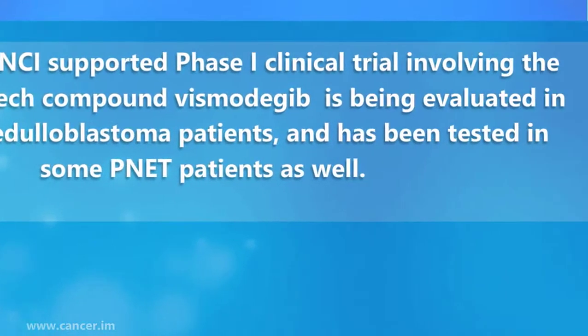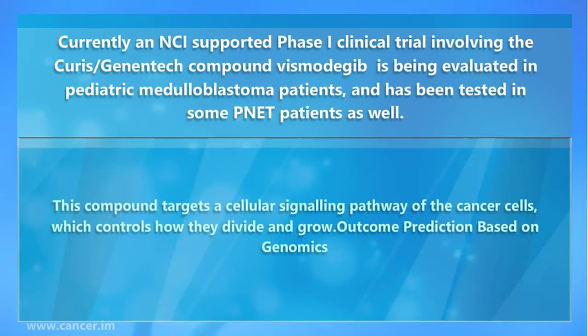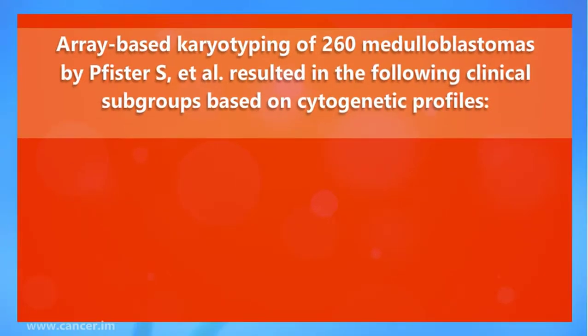Currently, an NCI-supported phase I clinical trial involving the Hedgehog pathway compound vismodegib is being evaluated in pediatric medulloblastoma patients and has been tested in some PNET patients as well. This compound targets a cellular signaling pathway of the cancer cells which controls how they divide and grow.